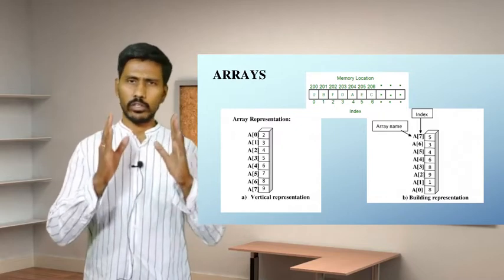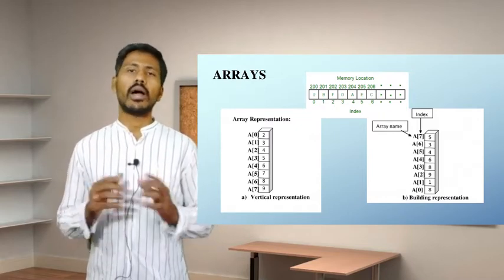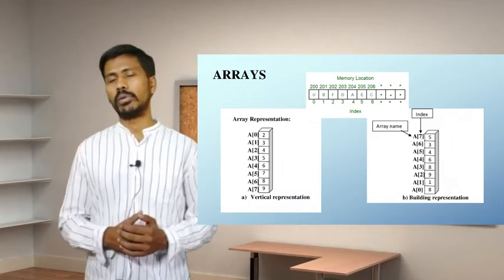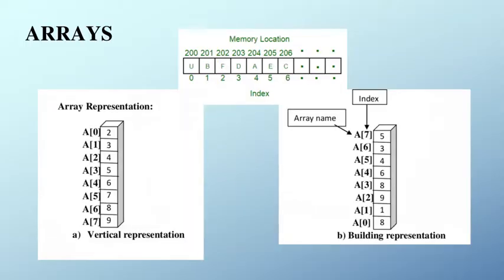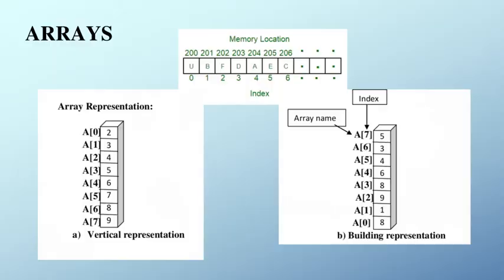If you declare a variable of 10 elements, you can use the index to store and read the array. You can use the array name and an integer variable with the index. You can use the array name with a beginning number and the ampersand symbol to store values in the array.